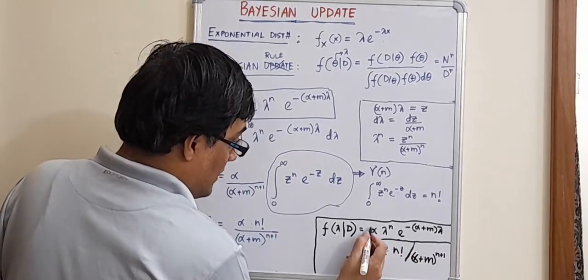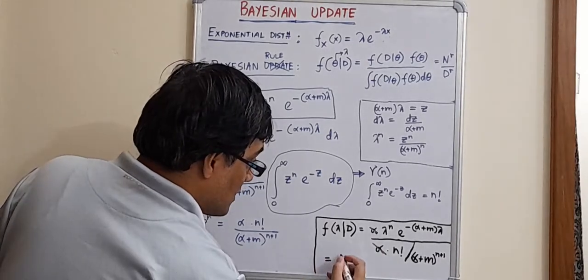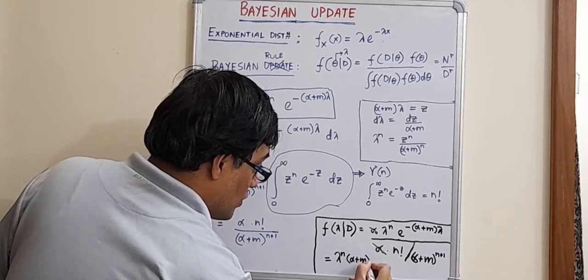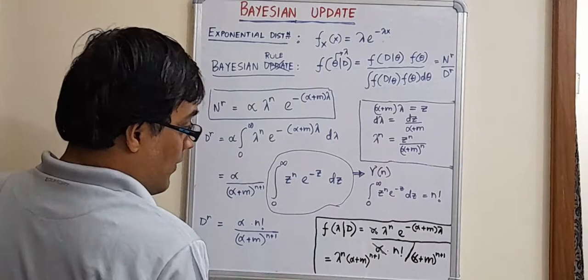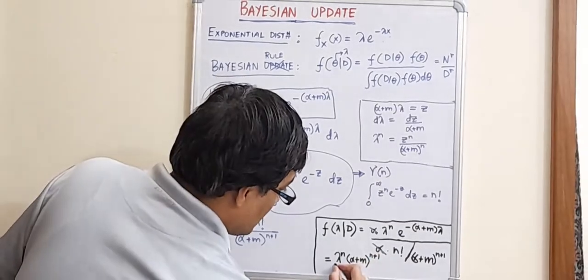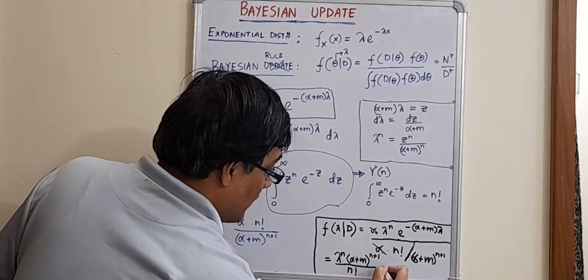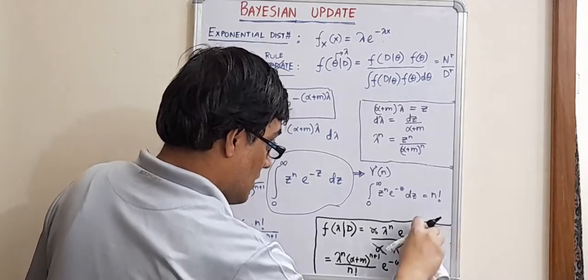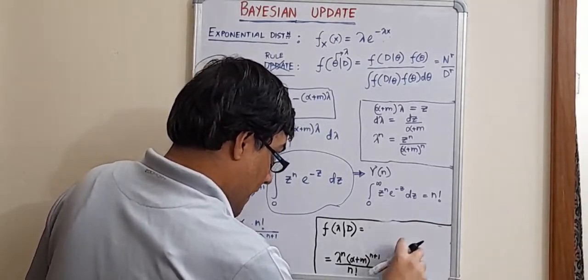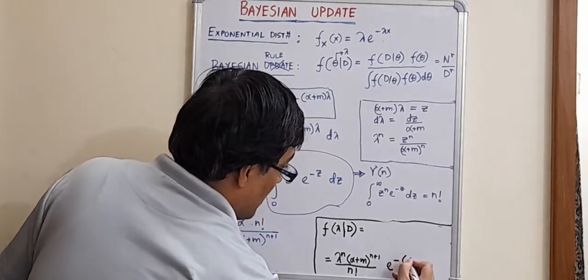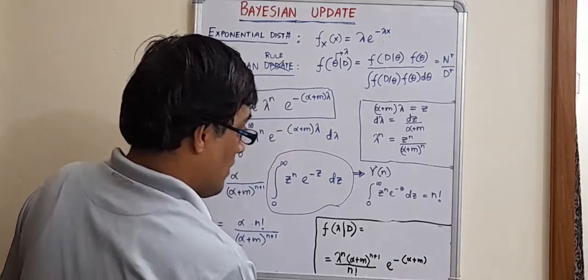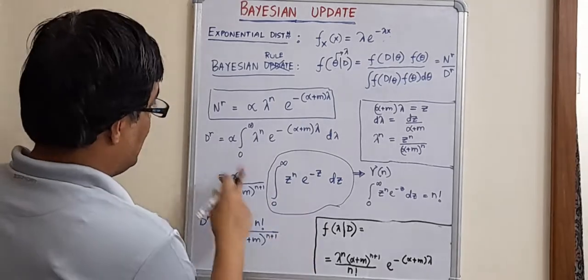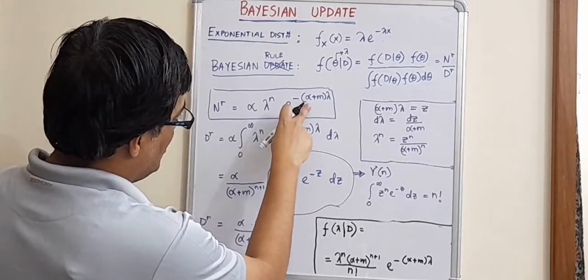So, what is important to know is this alpha and this alpha cancels out. So, we can write it down as lambda to the power n into alpha plus m to the power n plus 1, right? This goes up. So, we can write it down as lambda to the power n. The factorial n remains in the denominator multiplied by e to the power minus alpha plus m lambda into e to the power alpha plus m lambda.